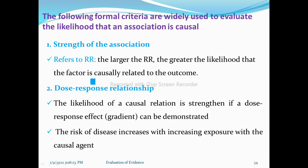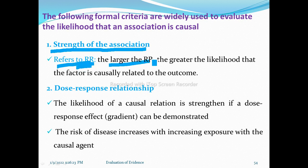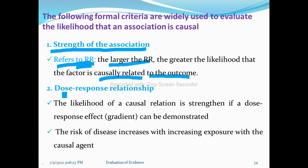The first criterion is strength of association. This refers to the degree of relative risk. The larger the relative risk, the greater the likelihood that the factor is causally related to the outcome. If the relative risk value is greater than three — say 10 or 20 — as the magnitude increases, the likelihood of causality increases.